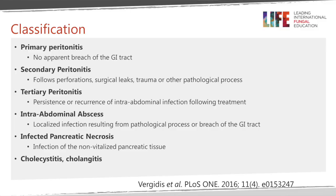Here is a classification used in our study. Primary peritonitis occurs when there is no apparent breach of the gastrointestinal tract and there is translocation of the organism. Primary peritonitis is also seen in the setting of peritoneal dialysis catheter-associated peritonitis. Secondary peritonitis involves perforation, surgical leak, trauma, or other pathologic processes within the abdomen.